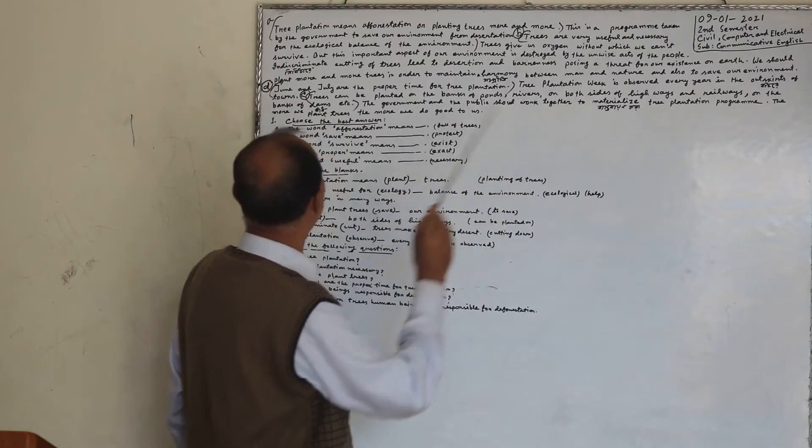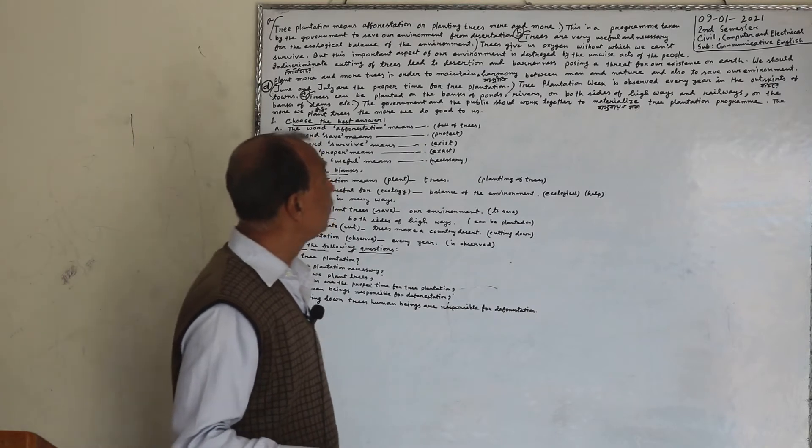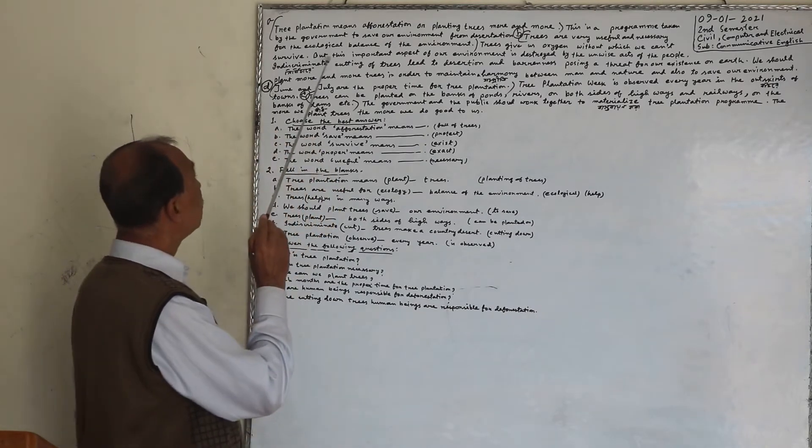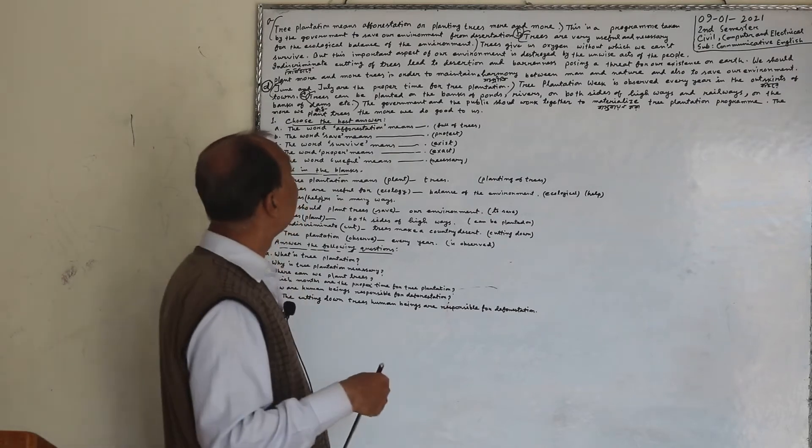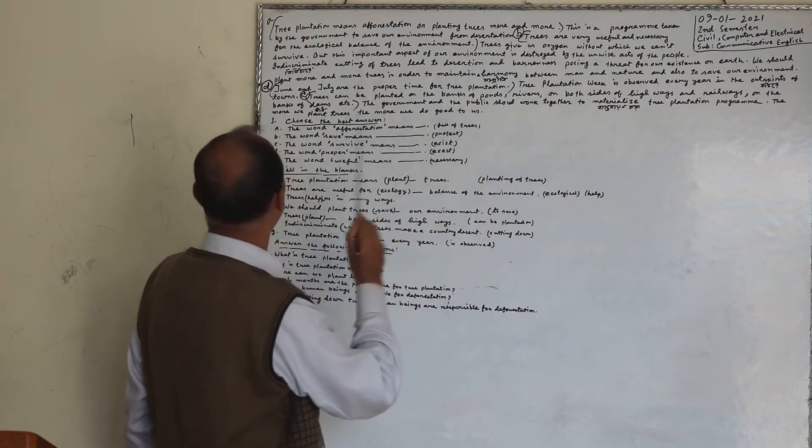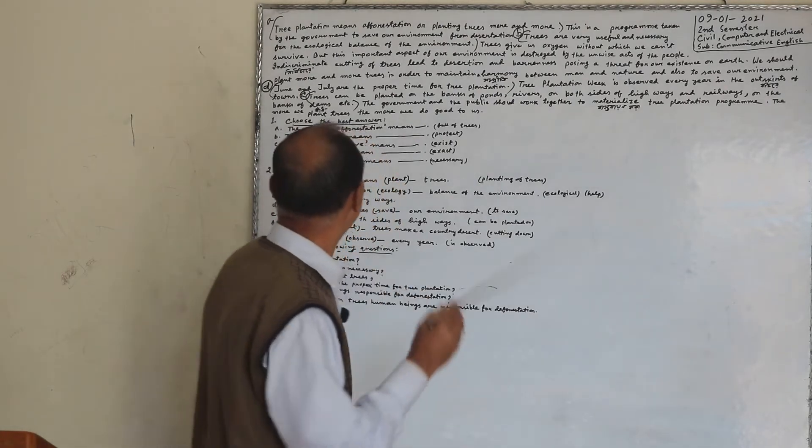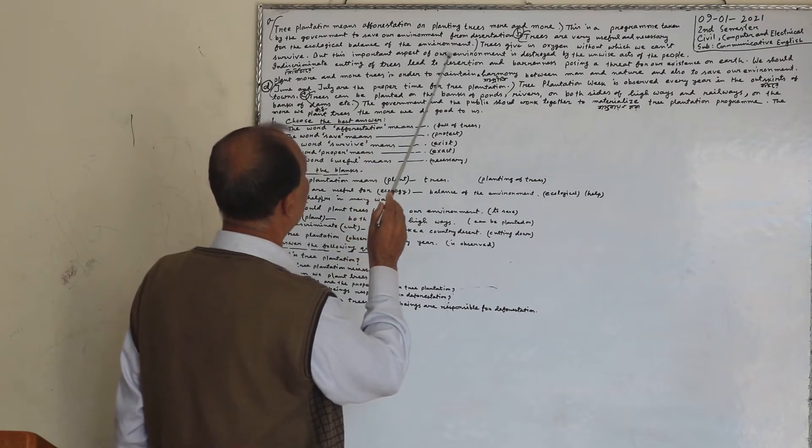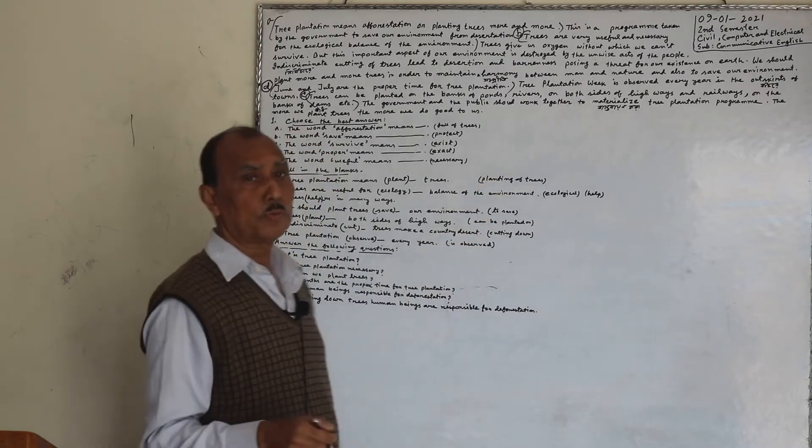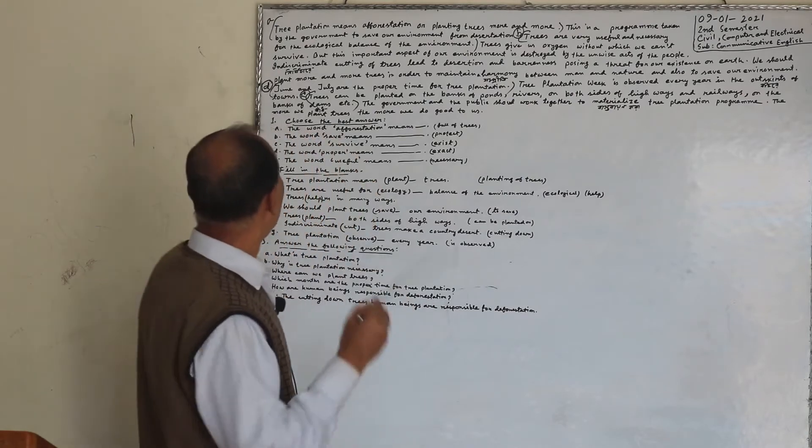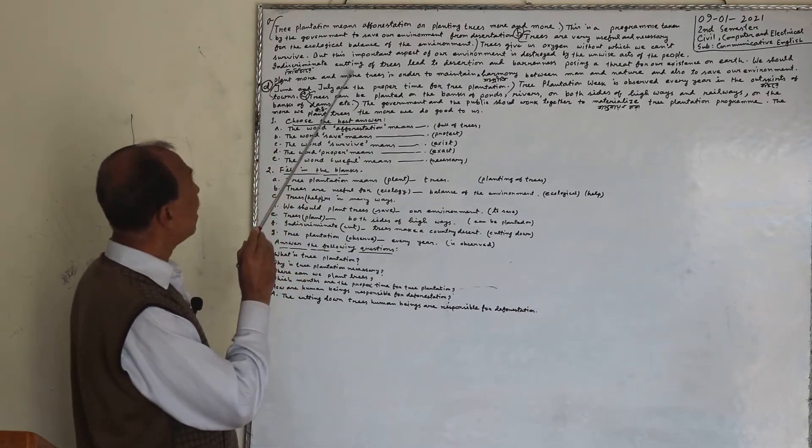Trees are very useful and necessary for the ecological balance of the environment. Trees give us oxygen without which we can't survive. But this important aspect of our environment is destroyed by the unwise acts of the people, to understand the fire and the forest. Indiscriminated cutting of trees,